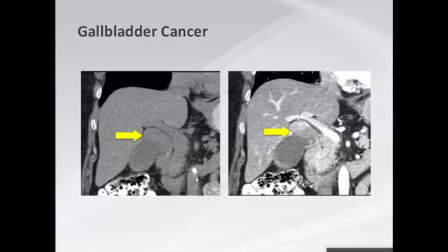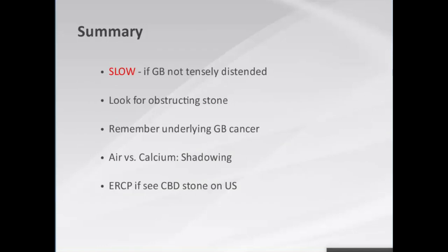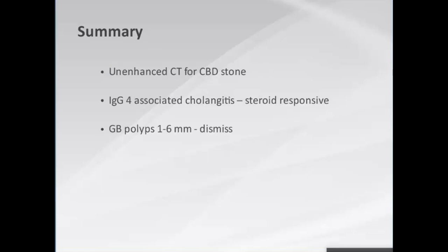In summary: be slow to diagnose acute uncomplicated calculus cholecystitis if the gallbladder is not tensely distended; look for the obstructing stone. Always keep underlying gallbladder cancer in mind — if you suspect cancer, alert your surgeon. Air versus calcium: it's the shadowing that makes the distinction. If you see an obstructing stone in the common duct on ultrasound, proceed directly to ERCP — no additional imaging needed. If using CT for a suspected stone, always include a non-enhanced series. Remember IgG4-associated cholangitis — it can mimic PSC but is steroid responsive. Small gallbladder polyps can be dismissed.